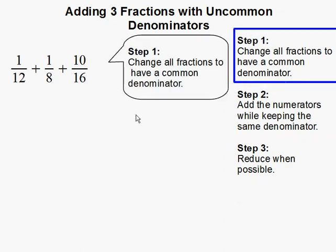Step one: change all fractions to have a common denominator. In this case our common denominator is 48, since 12, 8, and 16 can all go into 48.